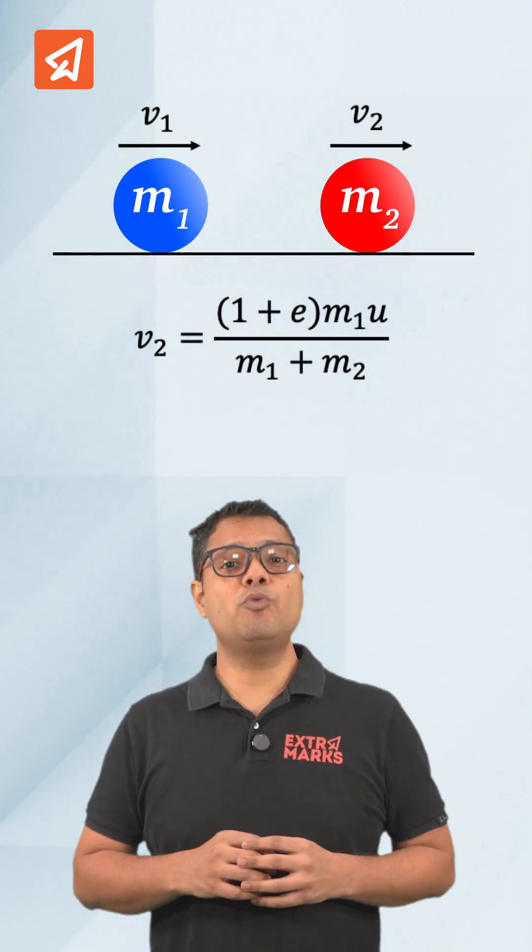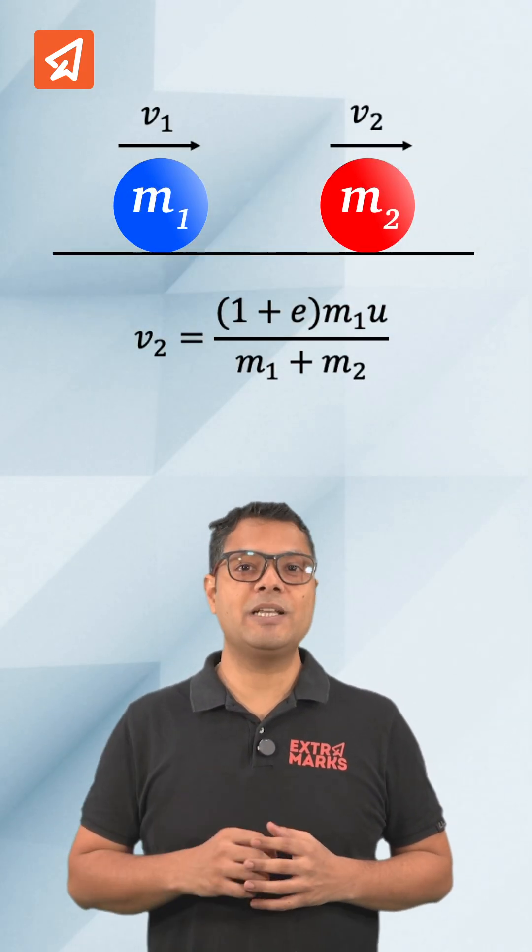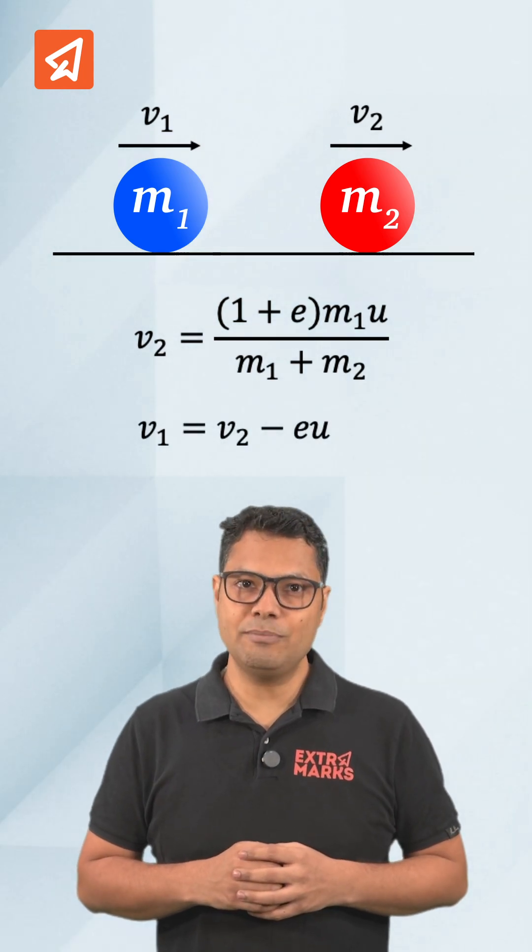Now, the trick is V2 is equal to 1 plus e times M1 u by M1 plus M2 and V1 is equal to V2 minus e times u.